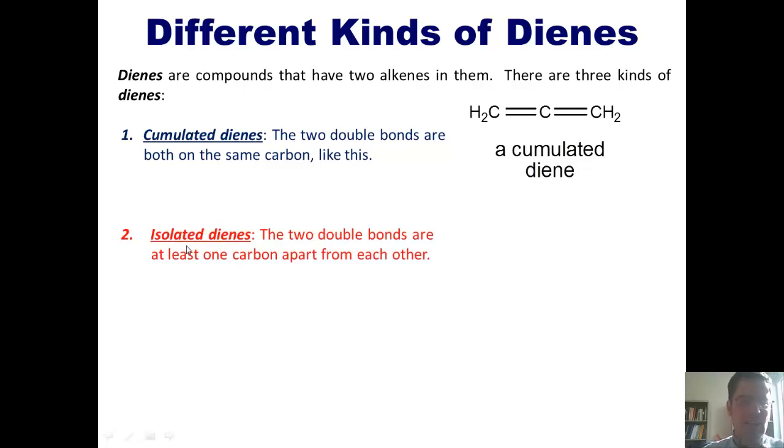Two are isolated dienes. Those are molecules in which the two double bonds are at least one carbon apart from each other. Here's an example of an isolated diene. The two alkenes are at least one carbon apart from each other. If I had more carbons or other atoms in between these two alkenes, it would also be an isolated diene.